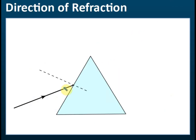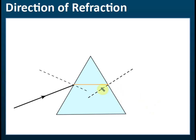For a triangular prism, the light enters from less dense to denser, so the light ray is refracted closer to the normal. Then from the prism to air — denser to less dense — it is refracted away from the normal. So the light ray makes a turn. That is the direction of refraction through a triangular prism.